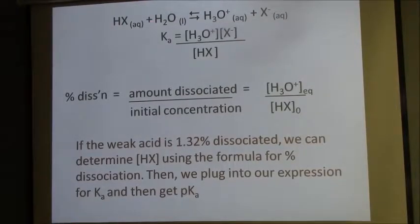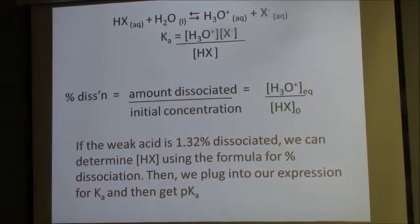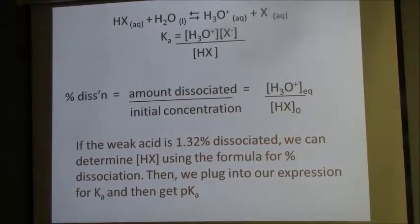Here's my generic acid expression and there's the Ka expression. Now the definition of percent dissociation is amount dissociated over initial concentration—so it's the amount of hydronium at equilibrium over the initial concentration of the acid. Now we know this value, plug it in right here, and we're going to do a little bit of arithmetic to figure out our other piece.